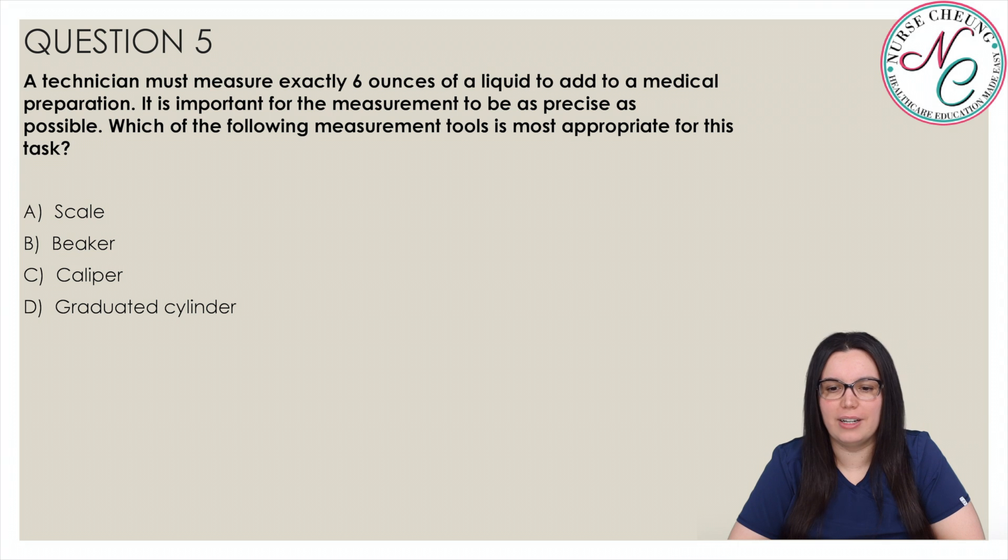A technician must measure exactly 6 ounces of a liquid to add to a medical preparation. It is important for the measurement to be as precise as possible. Which of the following measurement tools is most appropriate for this task? Is it A, scale, B, beaker, C, caliper, or D, graduated cylinder? And the correct answer is D, graduated cylinder. A volume of a liquid is best measured by a graduated cylinder or beaker among the choices listed above. Graduated cylinders generally provide more precise measurements than beakers, so a graduated cylinder would be the most appropriate tool for this task.